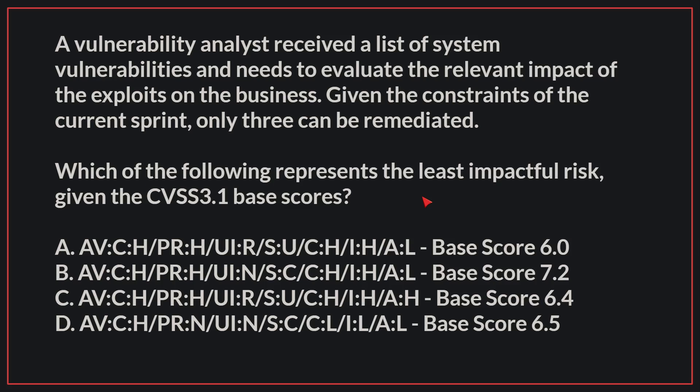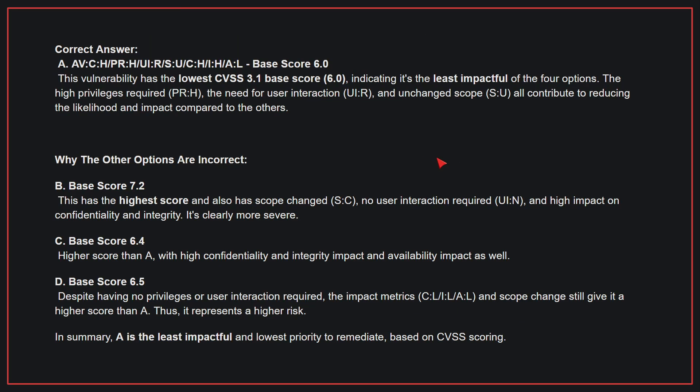A vulnerability analyst received a list of system vulnerabilities and needs to evaluate the relevant impact of the exploits on the business. Given the constraints of the current sprint, only three can be remediated. Which of the following represents the least impactful risk given the CVSS 3.1 base scores? The correct answer is A. This vulnerability has the lowest CVSS 3.1 base score, indicating it's the least impactful of the four options. The high privileges required, the need for user interaction, and unchanged scope all contribute to reducing the likelihood and impact compared to the others.